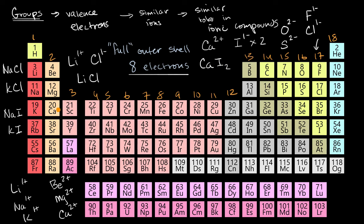What might calcium do with oxygen? Calcium likes to lose two electrons and oxygen likes to gain two electrons, so you could see something like calcium oxide.